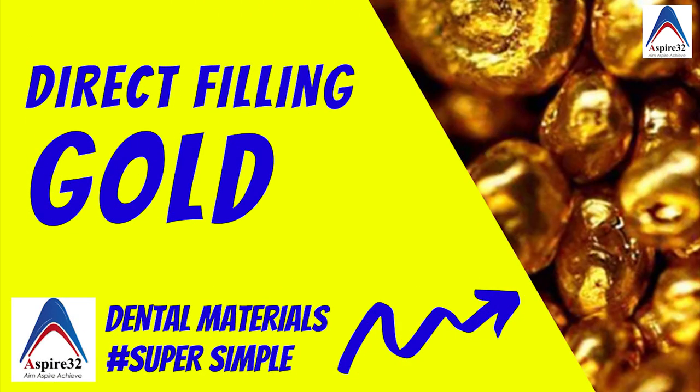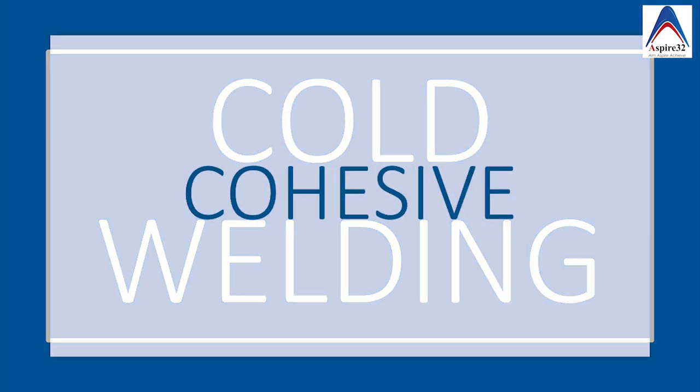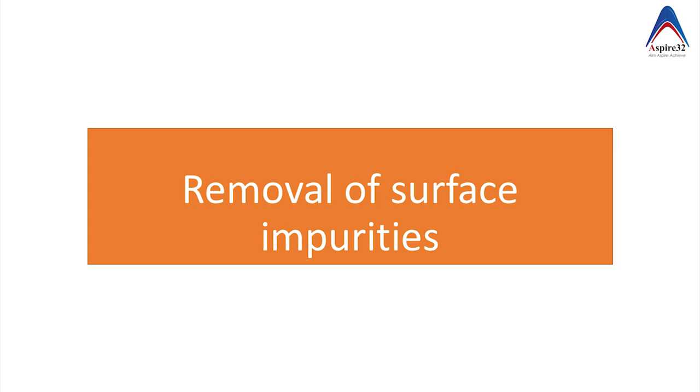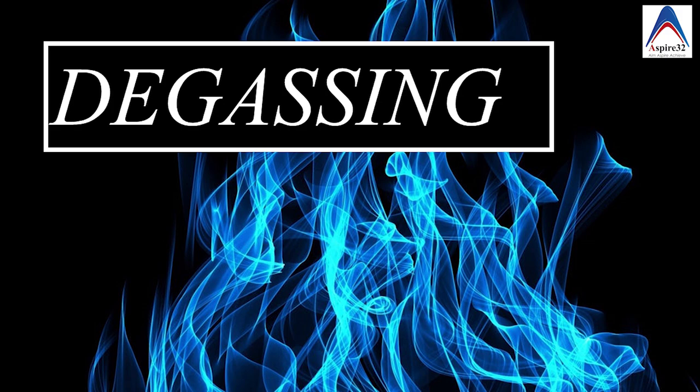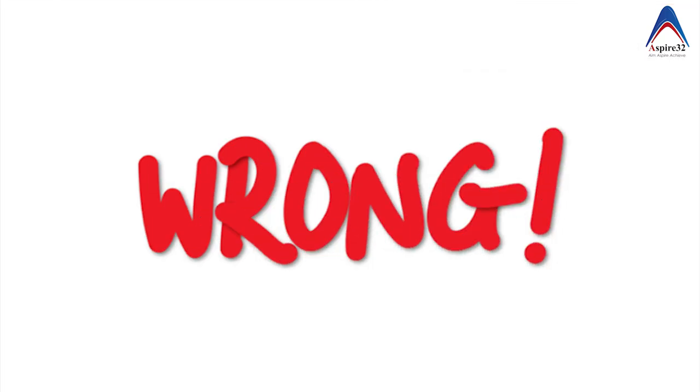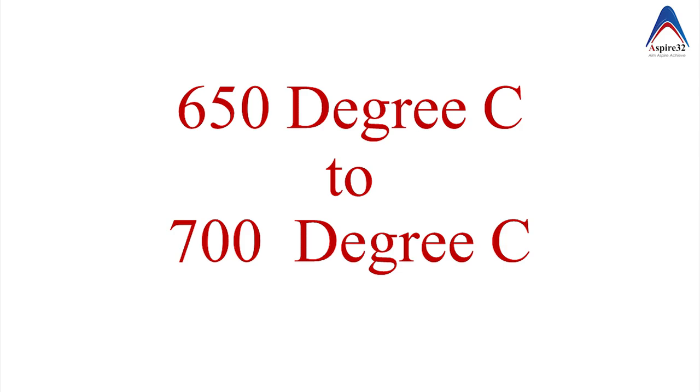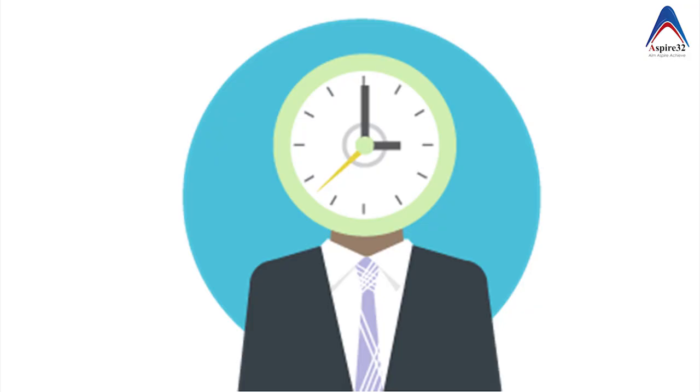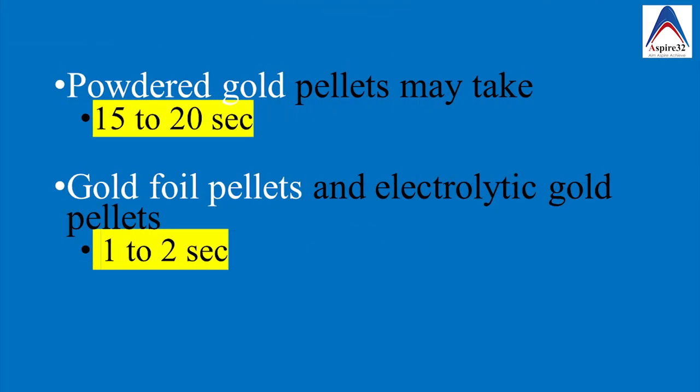At the beginning of this video we learned that if the gold has to be cold welded then it has to be in a cohesive form and the process of removal any surface impurities to make the gold cohesive is called as degassing. The term annealing as a substitute for degassing is not right because here the aim is to only remove the surface impurities and not to alter the structure of the gold and in the degassing procedure we heat the direct filling gold at a temperature of 650 to 700 degrees celsius till it appears dull red in color. Generally this stage is achieved in 15 to 20 seconds for powdered gold and for the gold foil and the electrolytic gold it reaches in 1 to 2 seconds.